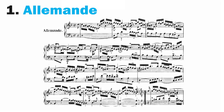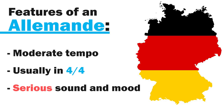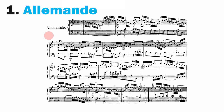The German allemande typically kicks off a Baroque dance suite if there's no overture or prelude as an introduction. Features of an allemande include a moderate tempo, usually in 4/4 time, with a serious character and mood — it's not a fun and games type of dance. This particular allemande is a little faster than typical, mainly because of constant running sixteenth notes, which gives it the illusion of speed. The stately and serious mood comes through clearly with a steady, consistent beat, minimal breaks, and a kind of waterfall of constant notes. It's also highly ornamental, with lots of trills and decorations throughout.